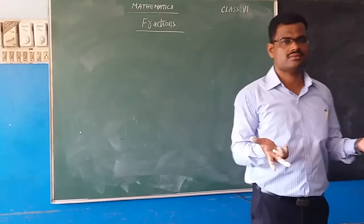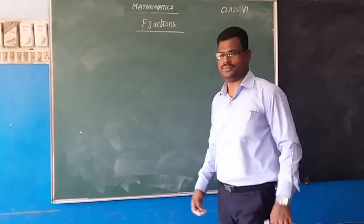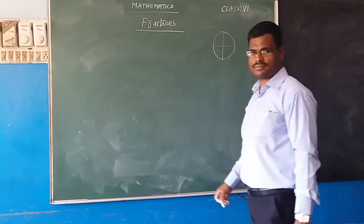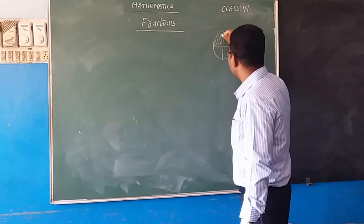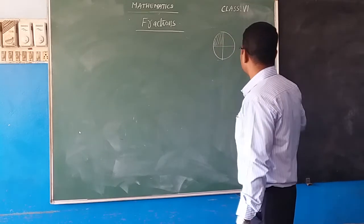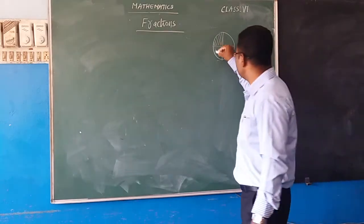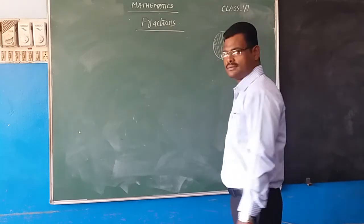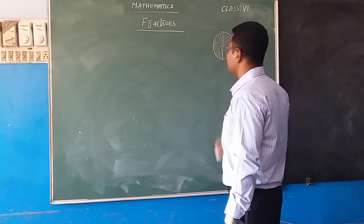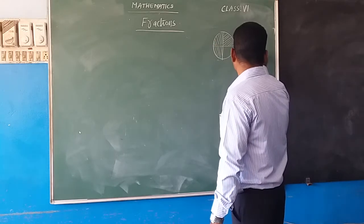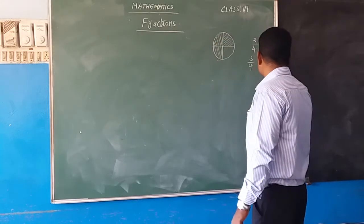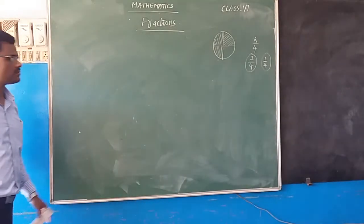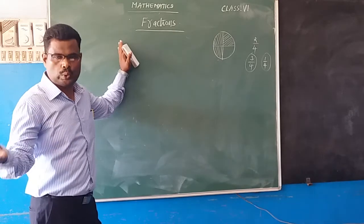Now I am going to revise the first part of fractions. So what do you mean by fractions? A fraction is a part of a whole. Suppose a circle is given. I am dividing this circle into four parts. If I take one part from four parts, that is one-fourth. If I share two parts out of four, or three parts out of four, one part remains. These numbers are called fractions.